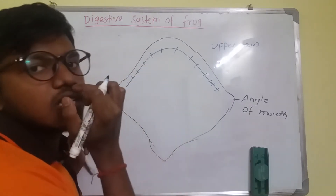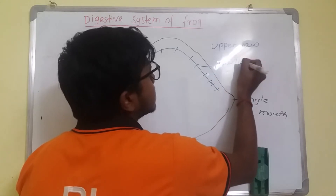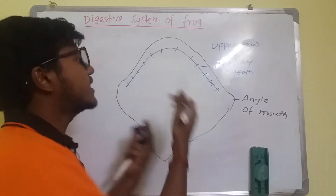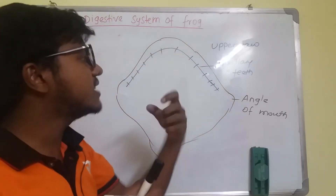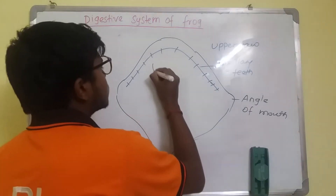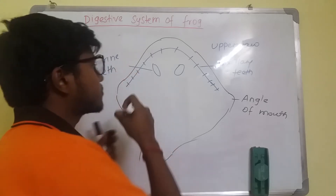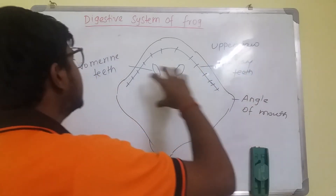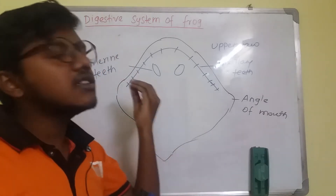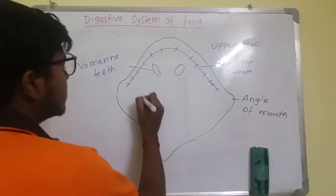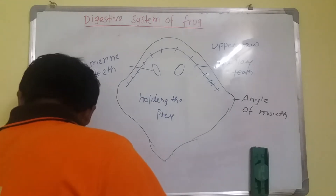The upper jaw contains two sets of teeth. The first set is attached to the maxilla bones and is known as maxillary teeth — these are pointed backward like a dagger. The second set is slightly conical in shape and is known as vomerine teeth. Both maxillary and vomerine teeth do not function for cutting or mastication; their only function is holding the prey.